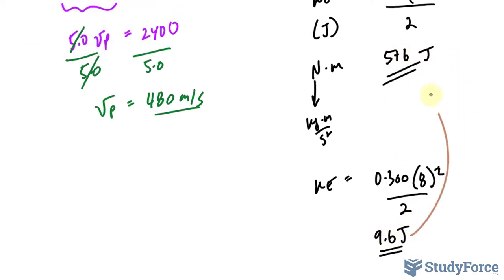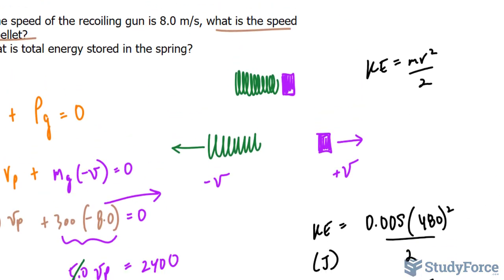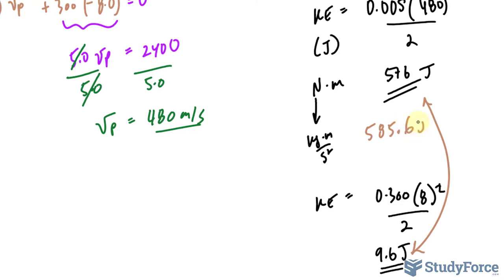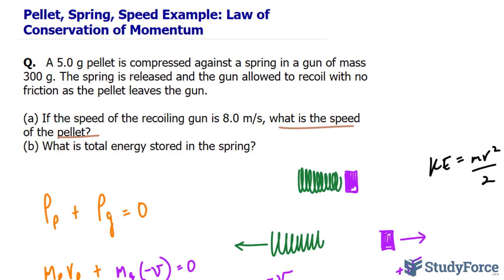We add them up to get the total energy stored in the spring. So adding these two numbers up, we have 585.6 joules. And so there you have it. That is how to apply the law of conservation of momentum.